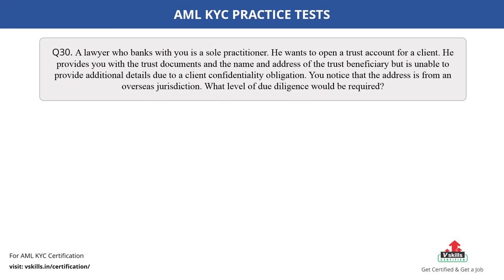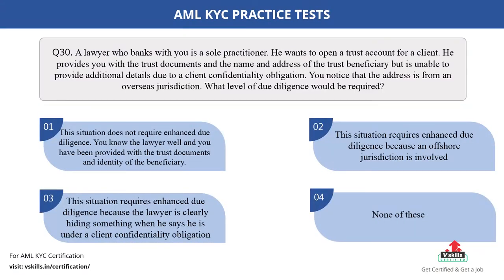Question number 30. A lawyer who banks with you is a sole practitioner. He wants to open a trust account for a client. He provides you with the trust documents and the name and address of the trust beneficiary, but is unable to provide additional details due to a client confidentiality obligation. You notice that the address is from an overseas jurisdiction. What level of due diligence would be required? The options are: A. This situation does not require enhanced due diligence — you know the lawyer well and you have been provided with the trust documents and identity of the beneficiary; B. This situation requires enhanced due diligence because an offshore jurisdiction is involved; C. This situation requires enhanced due diligence because the lawyer is clearly hiding something when he says he is under a client confidentiality obligation; D. None of these. The correct answer is option B.